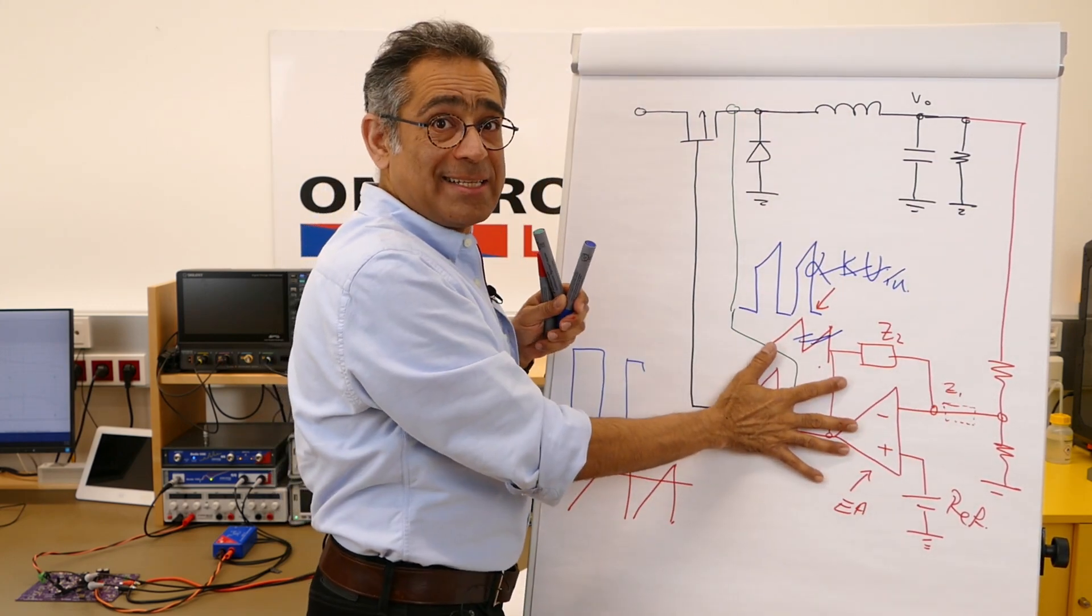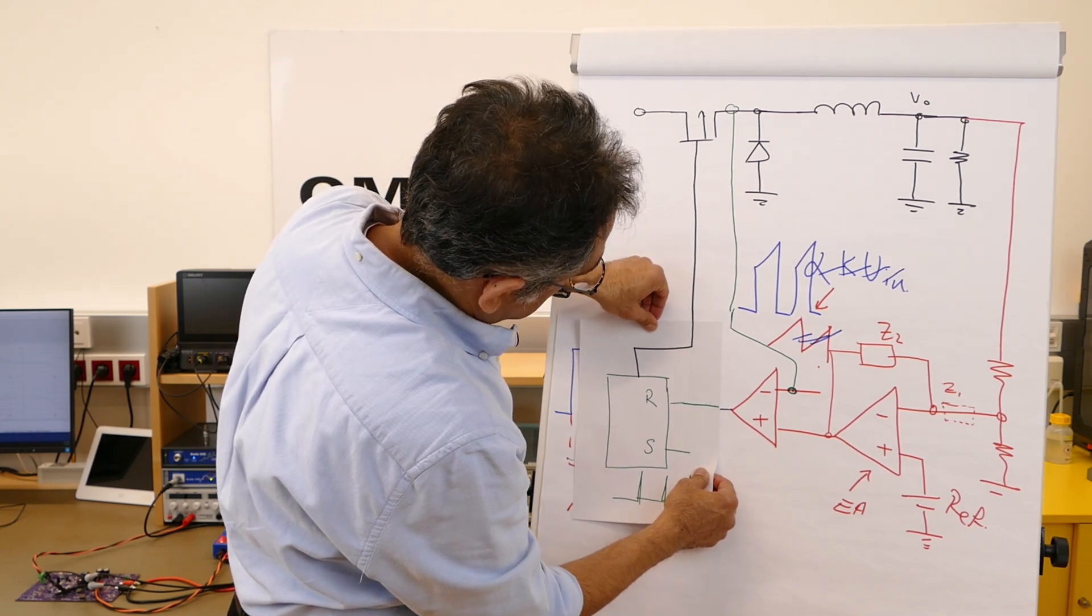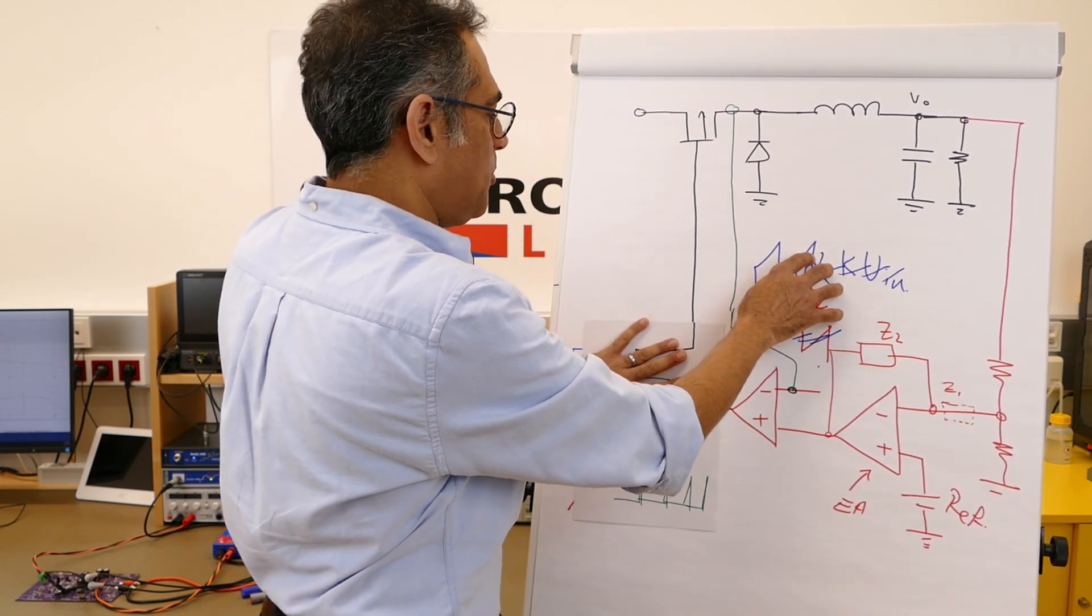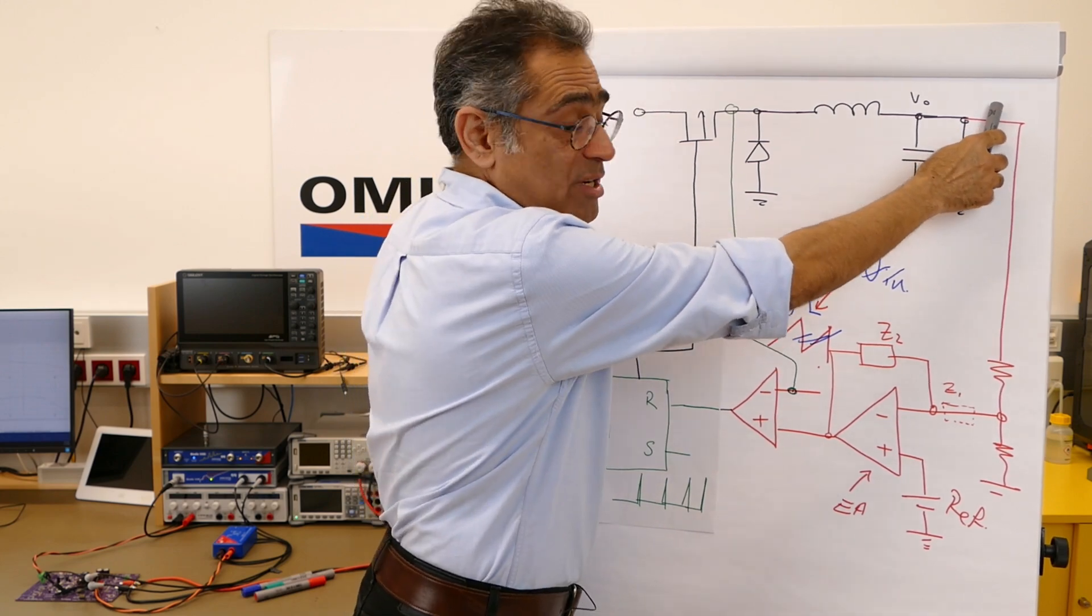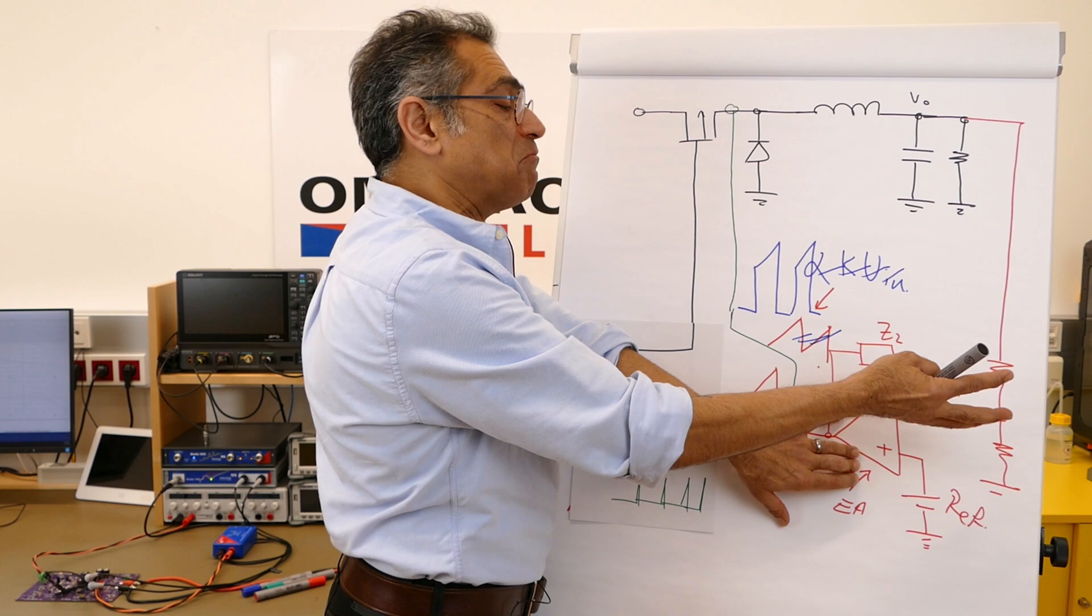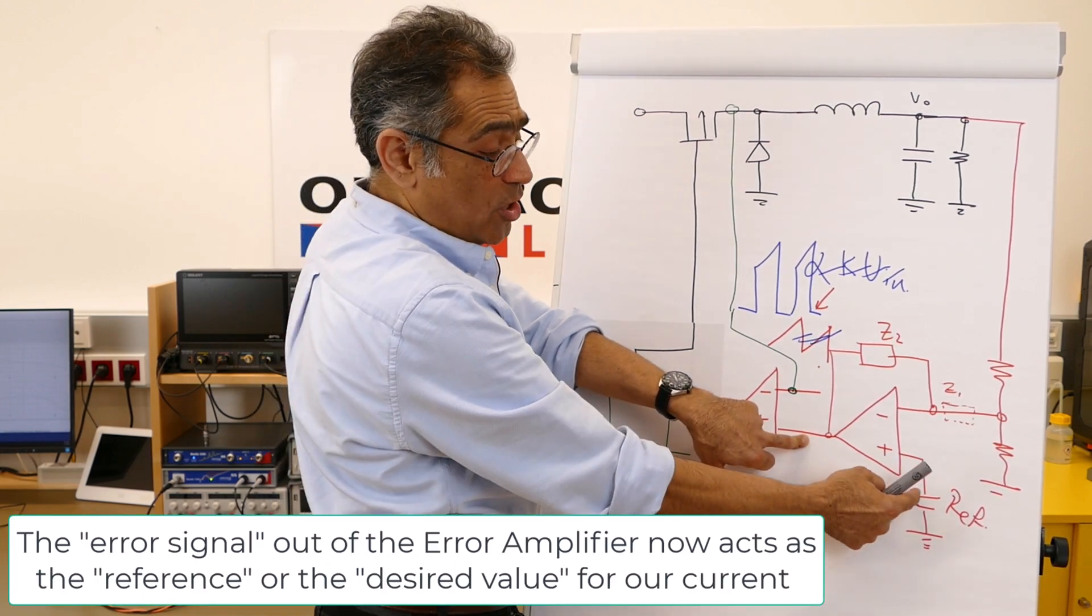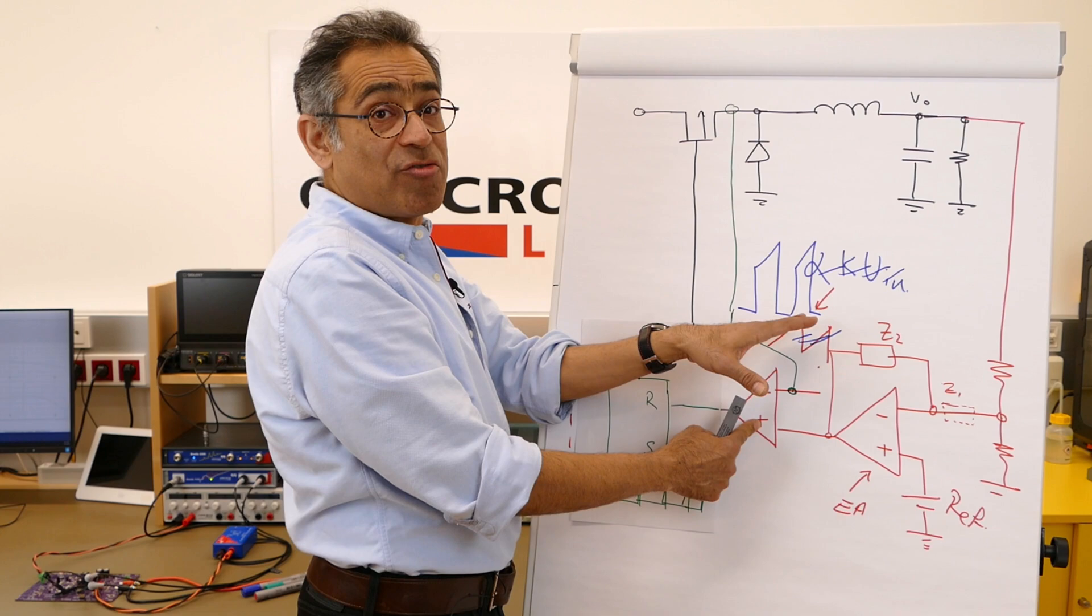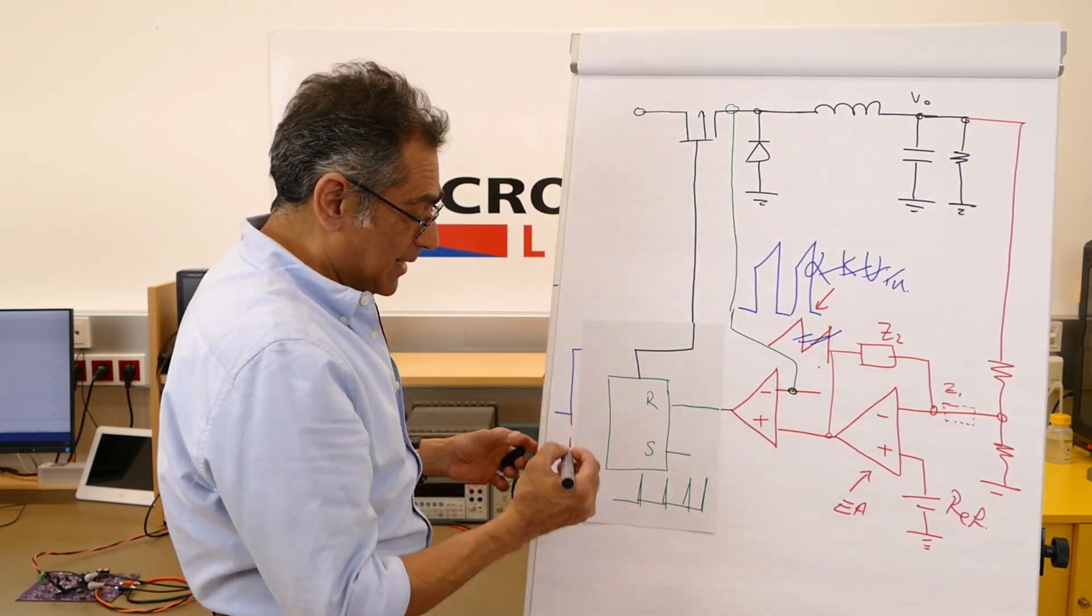So instead of this ramp here, we're going to take a measure of the inductor current. Usually we actually take it from the switch, which looks something like this. And instead of this ramp, we're going to feed that here. Therefore, I'm going to cross this out. For peak current mode, our ramp looks like this. So this part stays exactly the same as voltage mode, and then what they did was they added a set reset flip-flop right here. There we go, now we've got peak current mode.